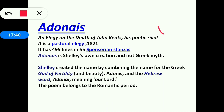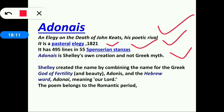Adonais is an elegy on the death of John Keats, Shelley's poetic rival. Though they often held contrary views, Shelley was deeply saddened at Keats's death and dedicated this pastoral elegy to him. Written in 1821, it has 495 lines in 55 Spenserian stanzas. Adonais is Shelley's own creation — not a Greek myth. He created the name by combining Adonis (Greek god of fertility and beauty) and the Hebrew word Adonai, meaning 'our Lord.'